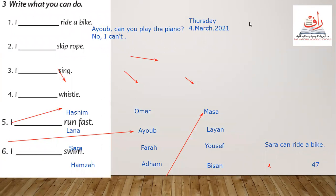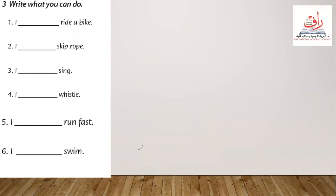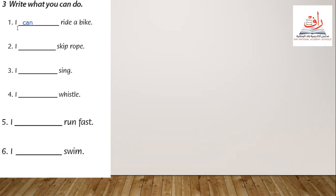You already have your page prepared. Number three: write what you can do. This is the question for you. I ask the students — can you, or can't you? Let's go for number one: I ride a bike. What about you? Can or can't? I will say can — I can ride a bike. Number two: I can or can't skip rope? I can't.